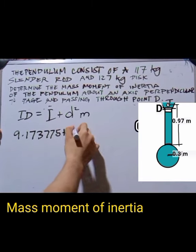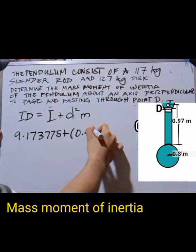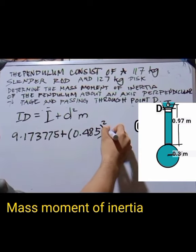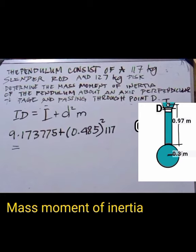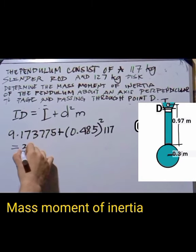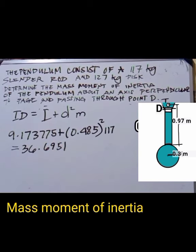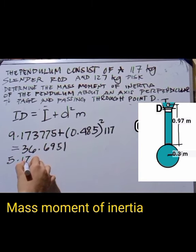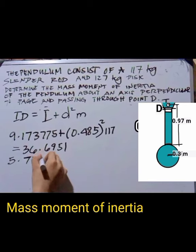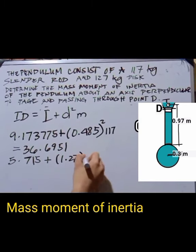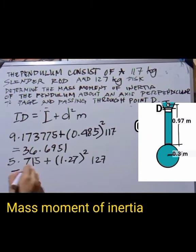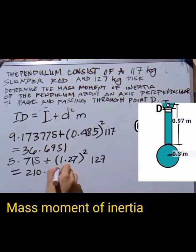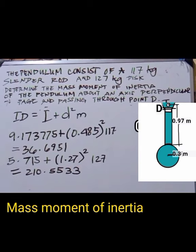For the rod: 9.1738 + (0.485)² × 117 = 127.5... For the disc: 5.715 + (1.27)² × 127. Computing both contributions gives partial totals of 210.5533 and 36.6951.